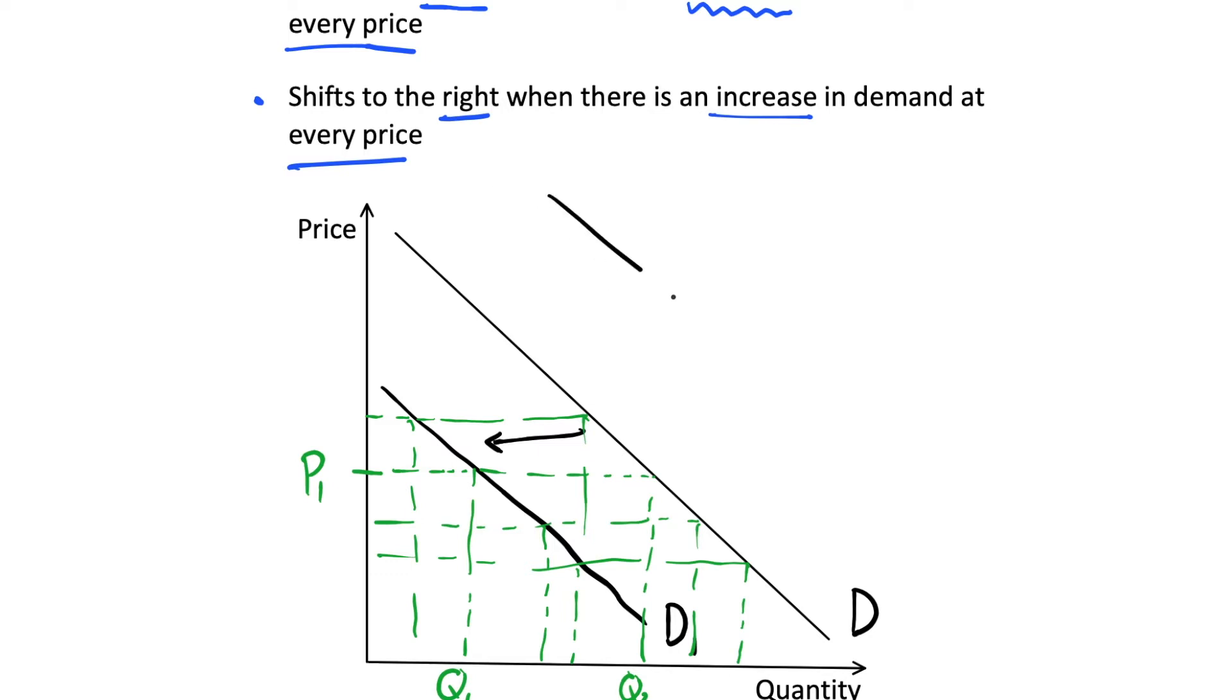And the opposite, if we shift the demand curve to the right like so, and this becomes demand curve D2, well, at every price level, we're going to have more demanded than at our original demand curve D. So a shift to the right, we have an increase in demand at every price.